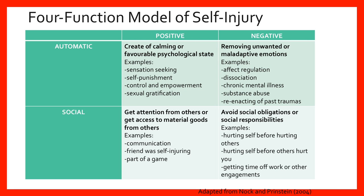Automatic negative involves self-injury used to remove unwanted or maladaptive emotions. Social positive is self-injury used to get attention or access material goods from others. And social negative refers to self-injury used to get out of social obligations and social responsibilities.